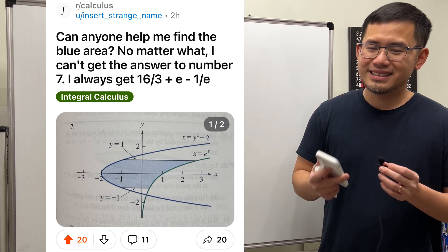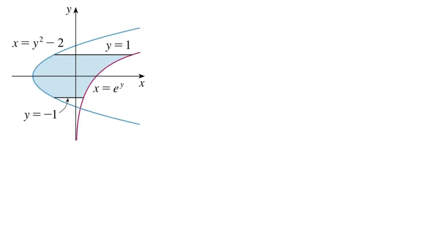Let's take a look. All right, let's see how we can find the area between these two curves. The first curve is this sideway parabola given by the equation x equals y squared minus 2. And the other one is this sideway exponential x equals e to the y. It's really just y equals ln x, but since the equation was written this way, let's use that.